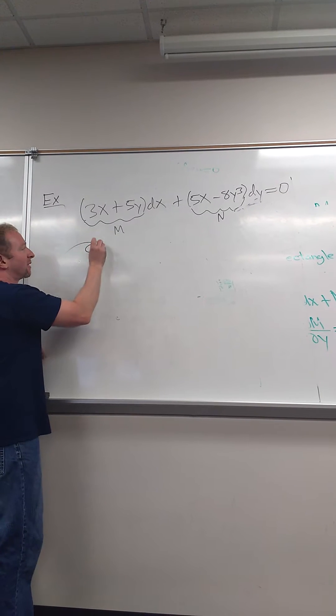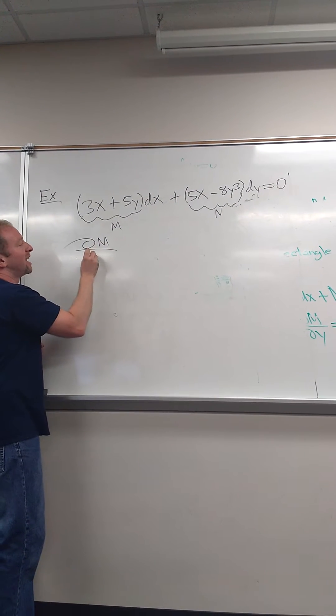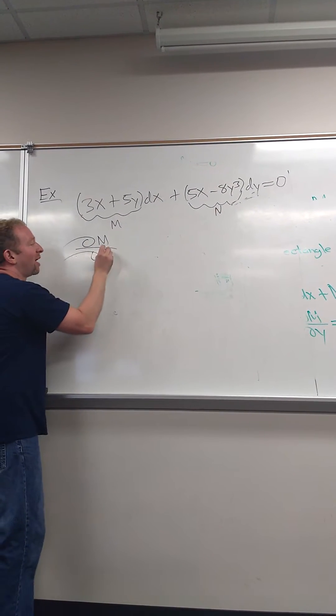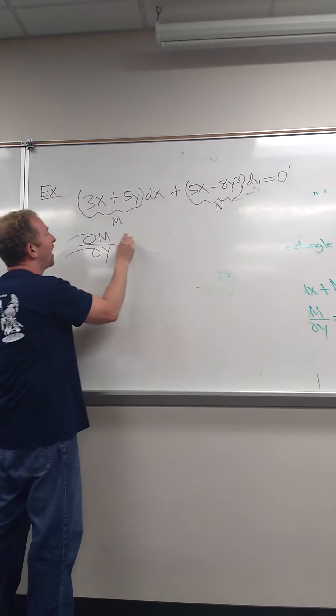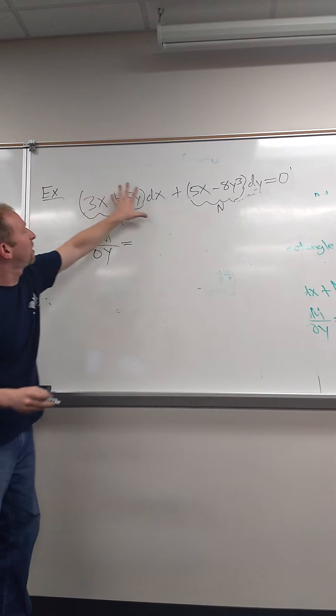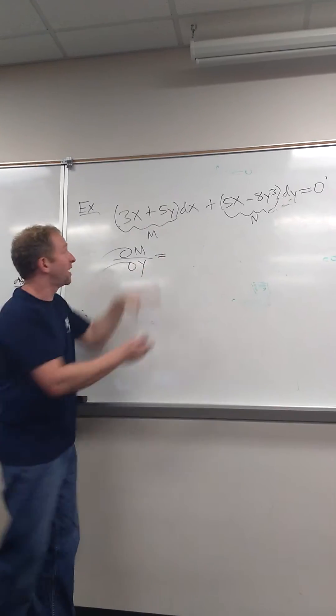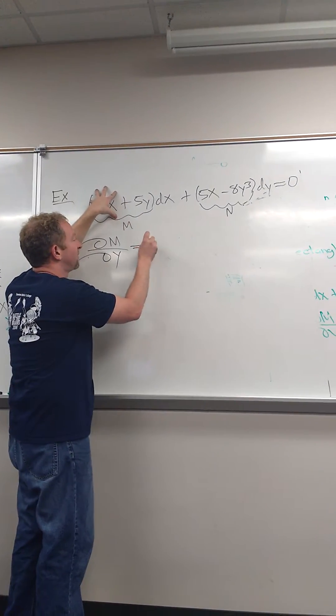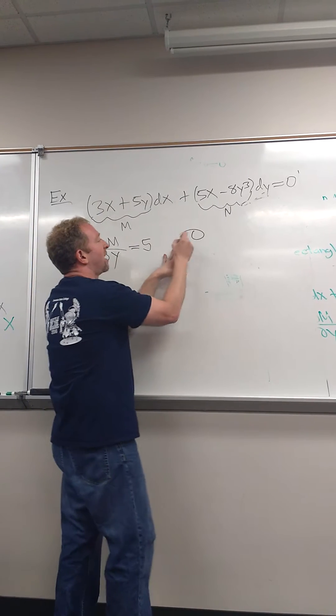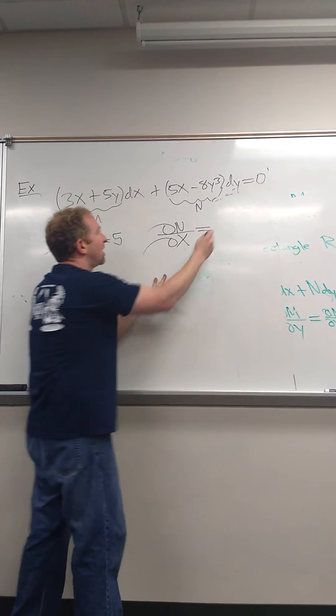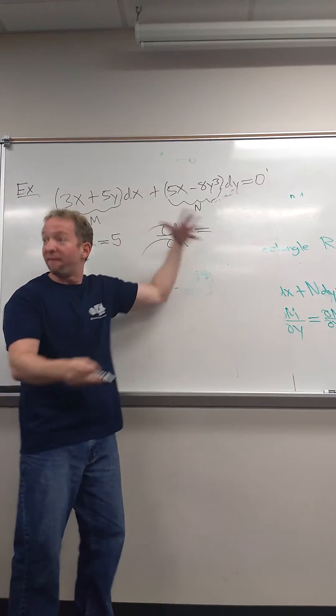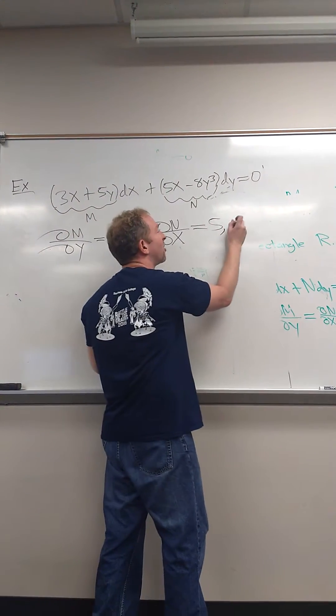So that's to compute. Let's see. So ∂m/∂y. So what's ∂m/∂y in this case? 5. Yeah, because the derivative here is 0. So this is 5. And then here we have ∂n/∂x. And so here, what's ∂n/∂x? 5. So it's exact, right? So exact.